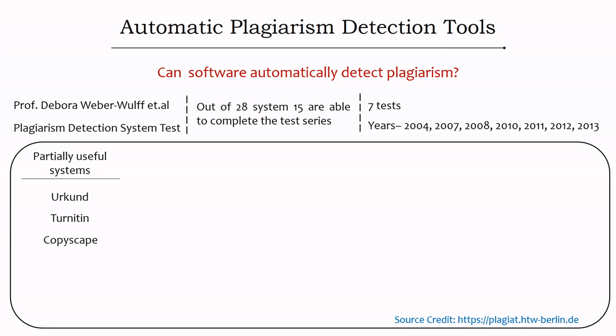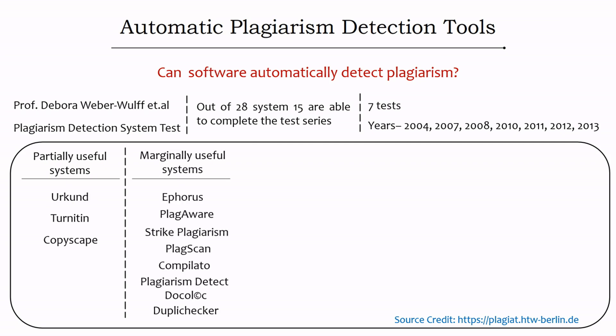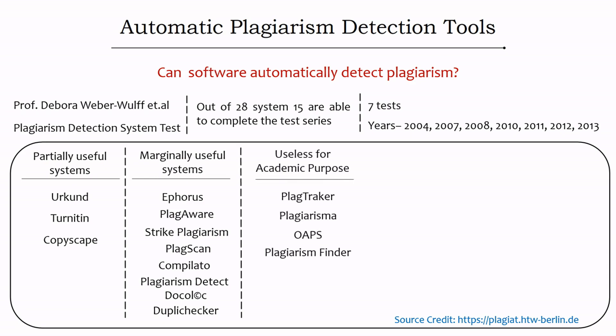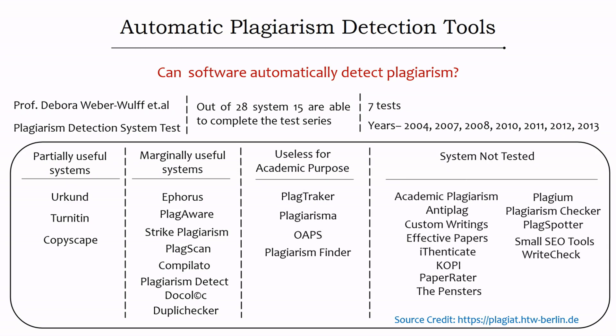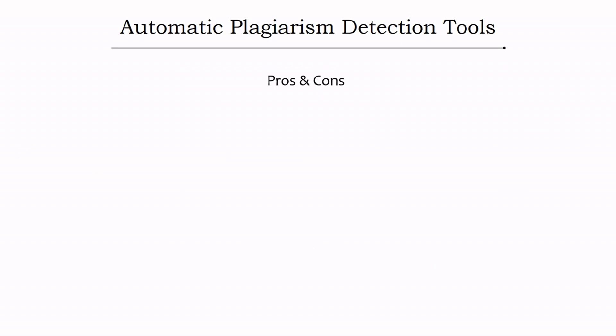The three partially useful tools are Urkund, Turnitin, and Copyscape. Eight tools are marginally useful: Aferus, PlagAware, Strike Plagiarism, PlagScan, Compilatio, PlagiarismDetect, DockerLock, and Duplichecker. Four are useless for academic purposes: PlagTracker, Plagiarism Open Access, Plagiarism Search, and Plagiarism Finder. From a personal viewpoint, Turnitin and iThenticate are recommended, as both are made by iParadigms and use the same database.